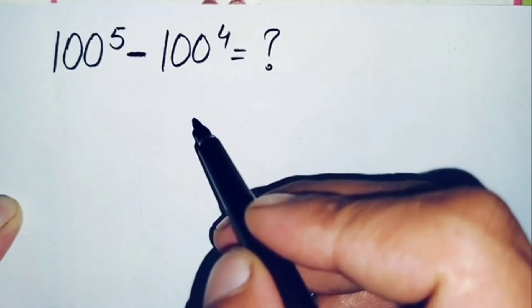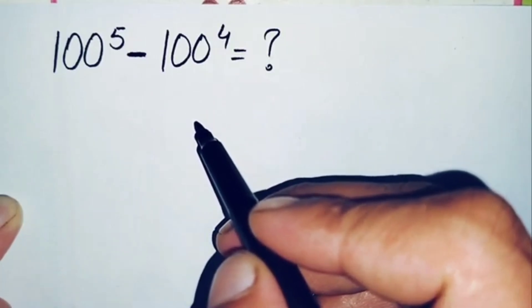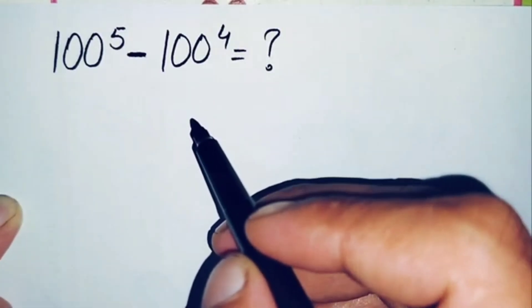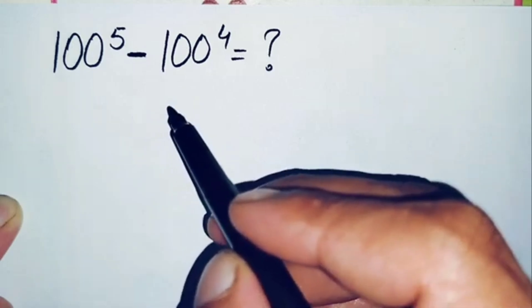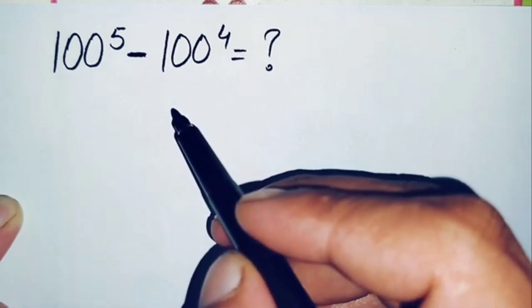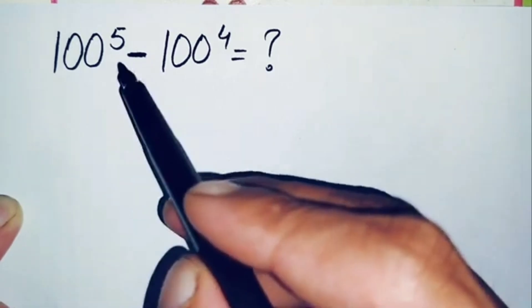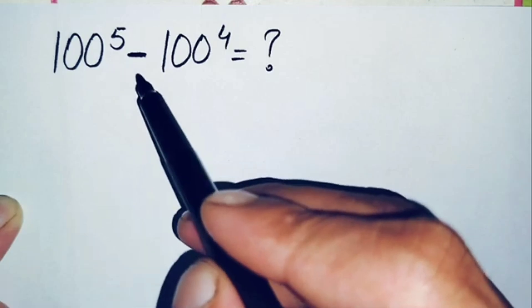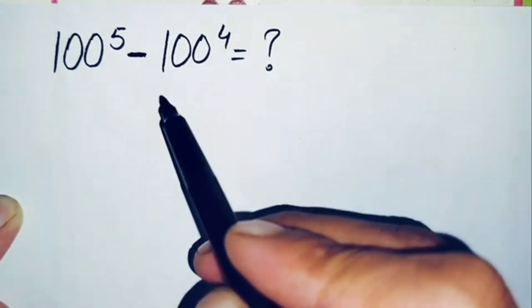Hello everyone, you are welcome to Math Explorer. In this video I'm going to solve and find the value of this amazing exponential simplification math problem, which is 100 to the power 5 minus 100 to the power 4.